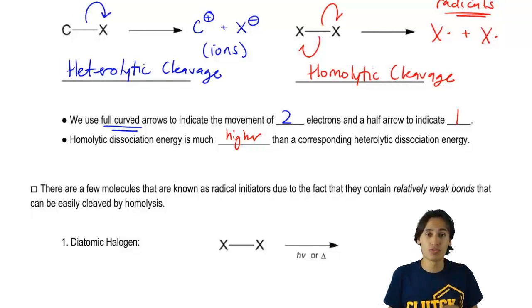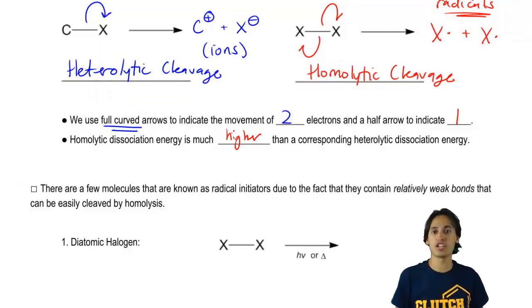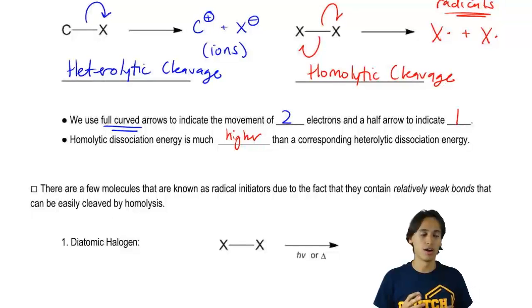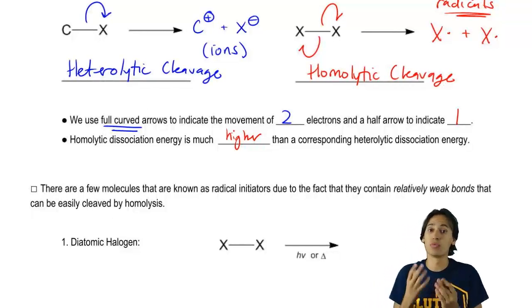Homolytic cleavage is really reserved just for radical reactions. These are reactions that are favorable for just a small set of reasons and it always starts off with an initiator.